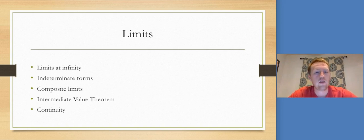First thing is limits. I see a lot of limit at infinity, so those are horizontal asymptotes. Indeterminate forms are zero over zero or infinity over infinity. Composite limits, which is a little strange, doesn't come up that much but I've definitely seen it. Our intermediate value theorem and continuity ideas.